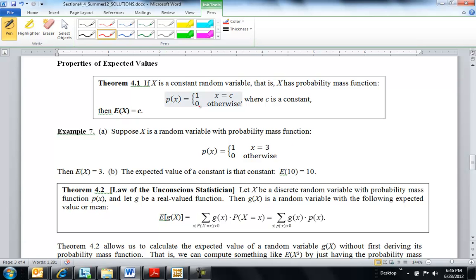I'll just talk about a few properties. If a random variable is constant, it can only take on one value, then its expected value is that value. So here's an example of that.